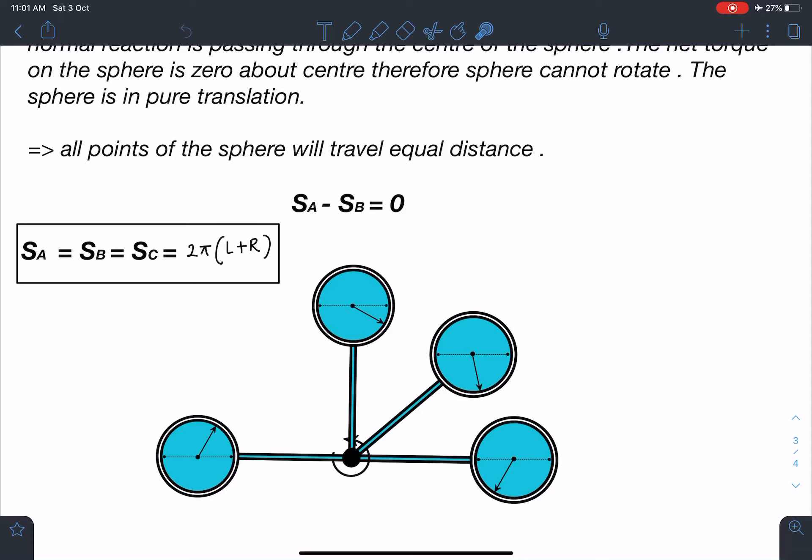Whether it is A or it is B. For B, center is slightly this side, here, R distance. Similarly for C, center is this hinge point and for A, center will lie this side.